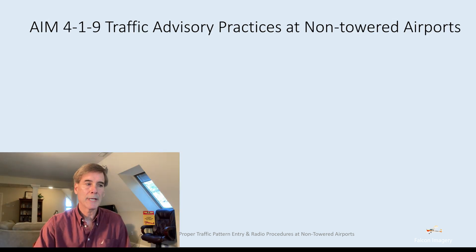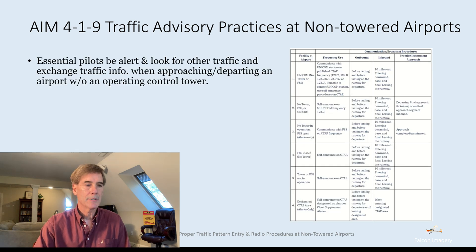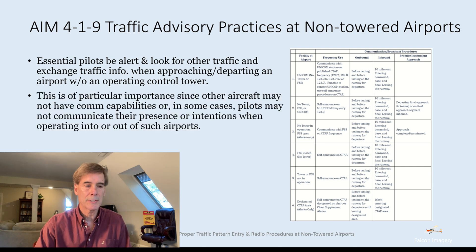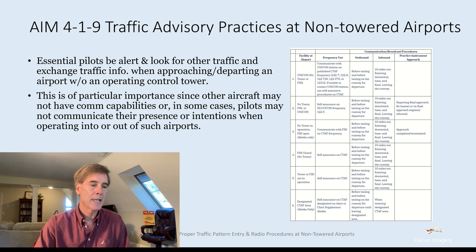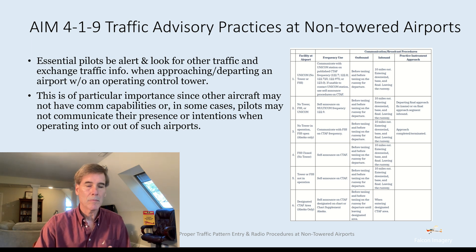The AIM 4-1-9, Traffic Advisory Practices at Non-Towered Airports: it's essential that pilots be alert, look for other traffic, and exchange traffic information via radio when approaching or departing an airport without an operating control tower. This is of particular importance since other aircraft may not have radio capabilities or pilots may not communicate their presence or intentions. In the Minden accident, the Globe Swift pilot did not have ADS-B out so the CAP plane crew couldn't see him on their ADS-B in, and the Globe Swift only announced entering the 45 — never called at 10 miles or 5 miles. Keep in mind aircraft do not necessarily need to have radios operating in Class G airspace.